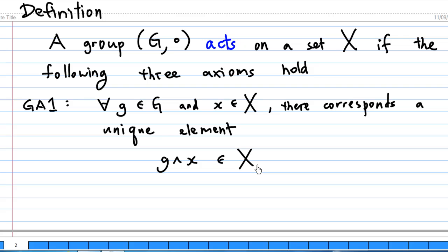That is, we can combine an element of G and an element of X together and give another element of X.